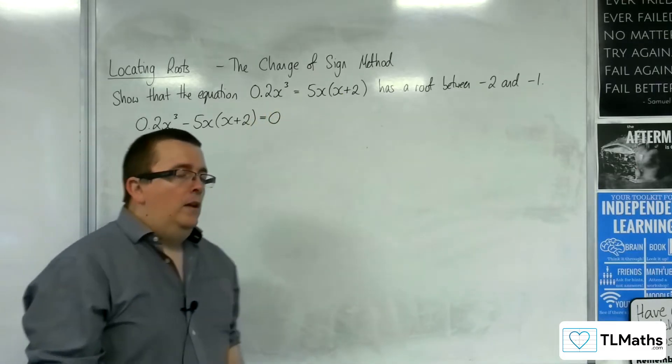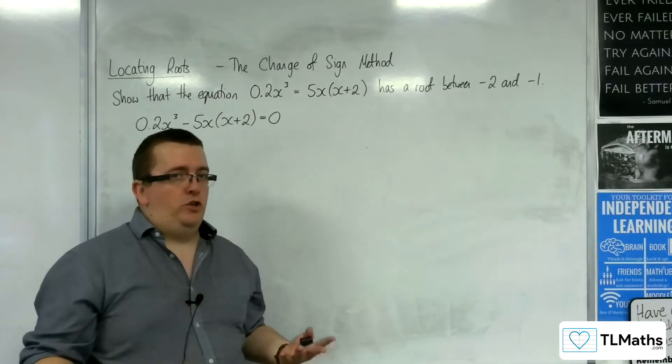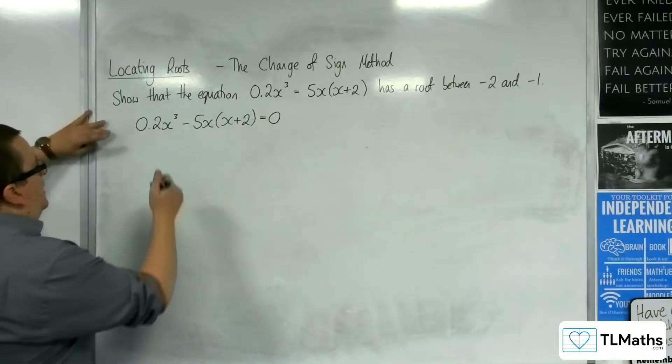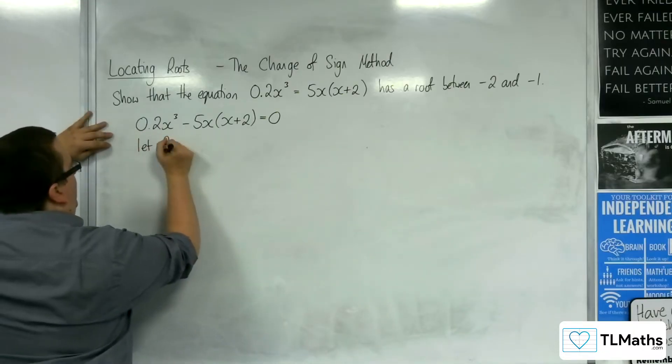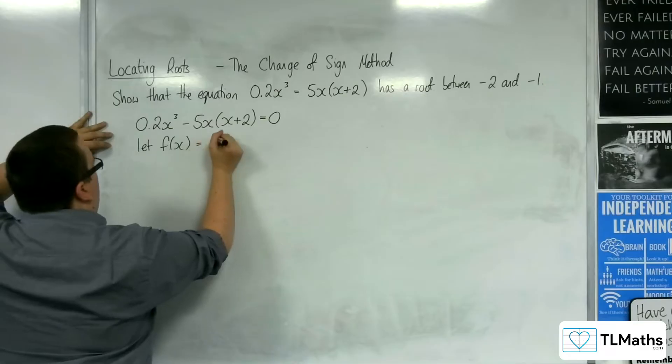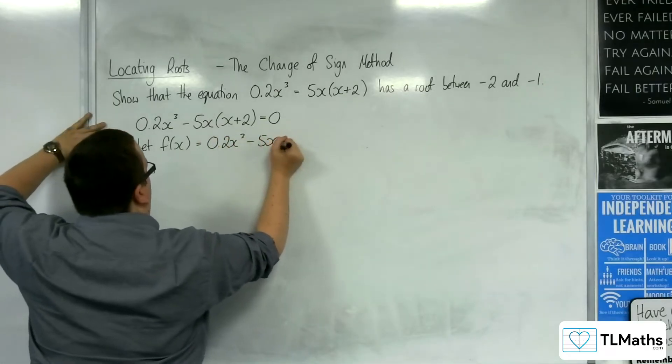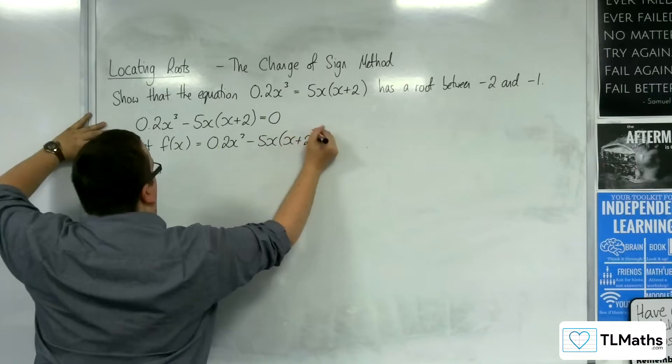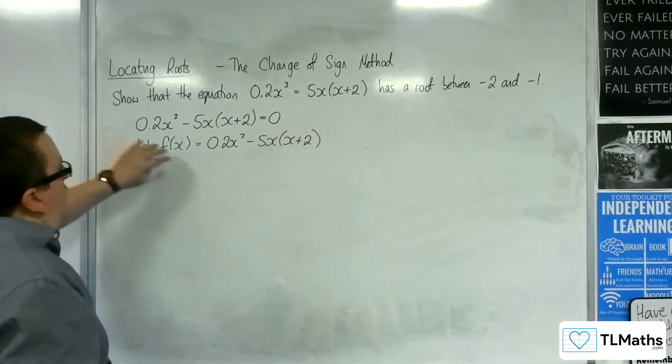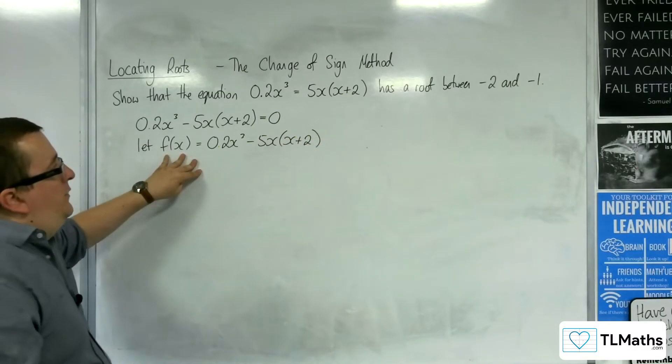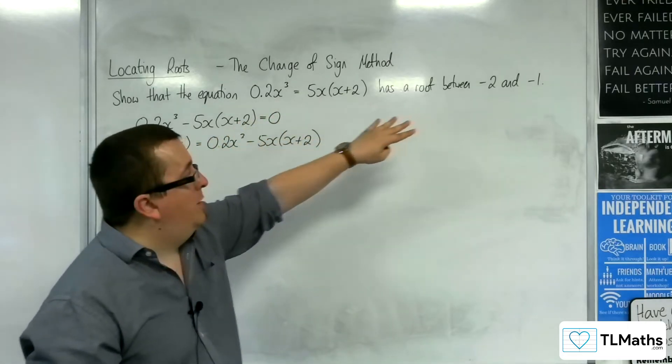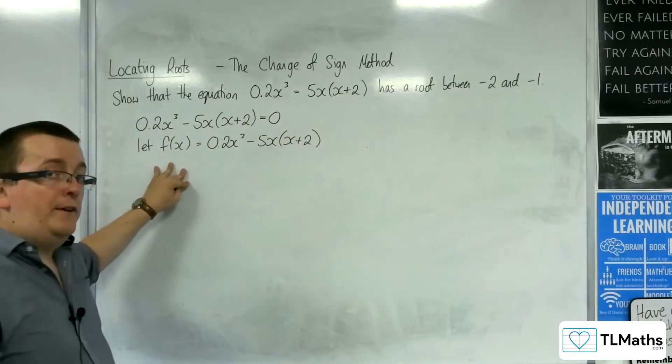Now I want to get this into function notation. So I'm going to let f(x) = 0.2x³ - 5x(x+2). And I'm going to look at f(-2) and f(-1) to see if I get this change of sign.